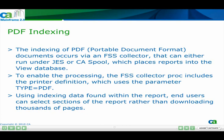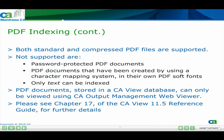Using indexing data found within the report, end users can select sections of the report rather than downloading thousands of pages. Both standard and compressed PDF files are supported. Not supported are password-protected PDF documents, PDF documents created using a character mapping system with their own PDF soft fonts, and only text can be indexed. PDF documents stored in a CAVUE database can only be viewed using CA Output Management Web Viewer. Please see Chapter 17 of the CAVUE 11.5 Reference Guide for further details.